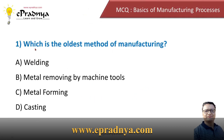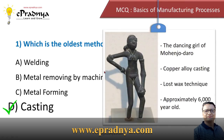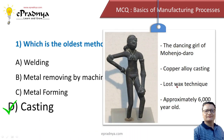First question: which is the oldest method of manufacturing? Options given are welding, metal removal by machine tool, metal forming, and casting. The correct answer is casting. One of the oldest castings found in Mohenjo-daro is known as the dancing girl sculpture, which is made of copper alloy. It is believed to have been made by the lost wax technique — one of the casting techniques — and is approximately 6,000 years old.